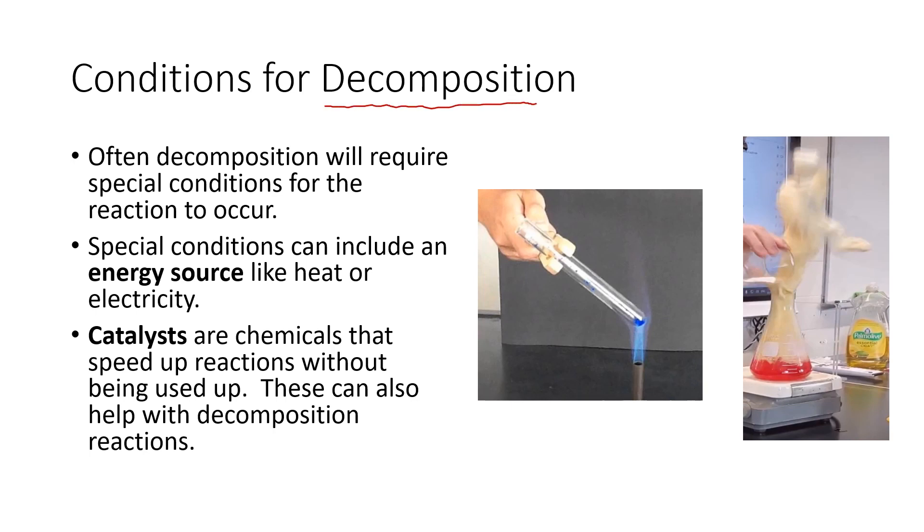One thing you'll see with almost all decomposition reactions is that they're always going to need some help to occur, because it involves breaking apart bonds that were formed in synthesis. Usually that means some electricity like in our example with water, or some heat like in the picture that will help these reactions along. The other option is to use a catalyst, which lowers the amount of energy needed for a reaction to occur.